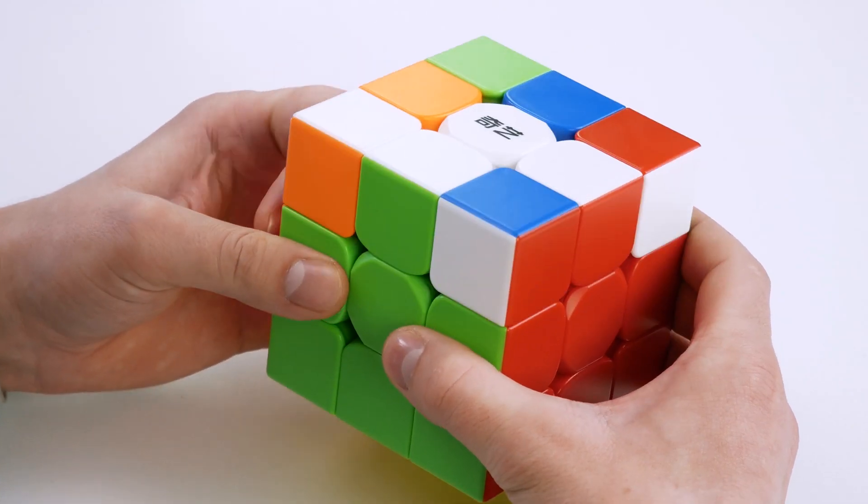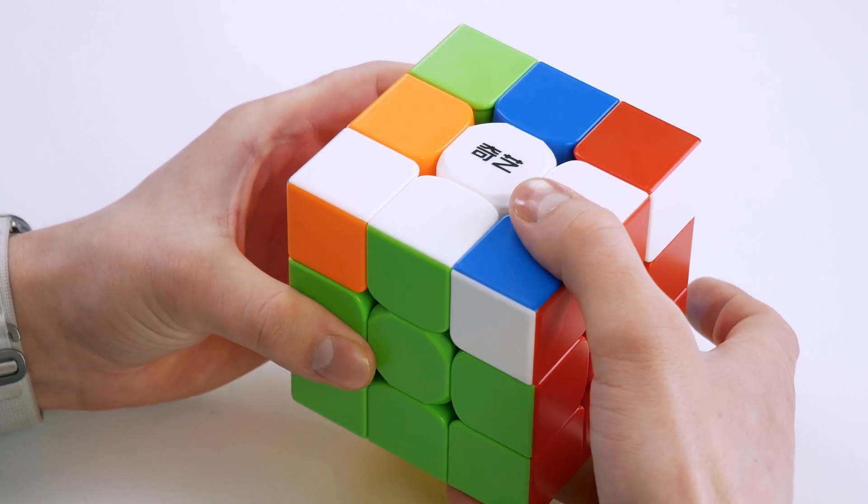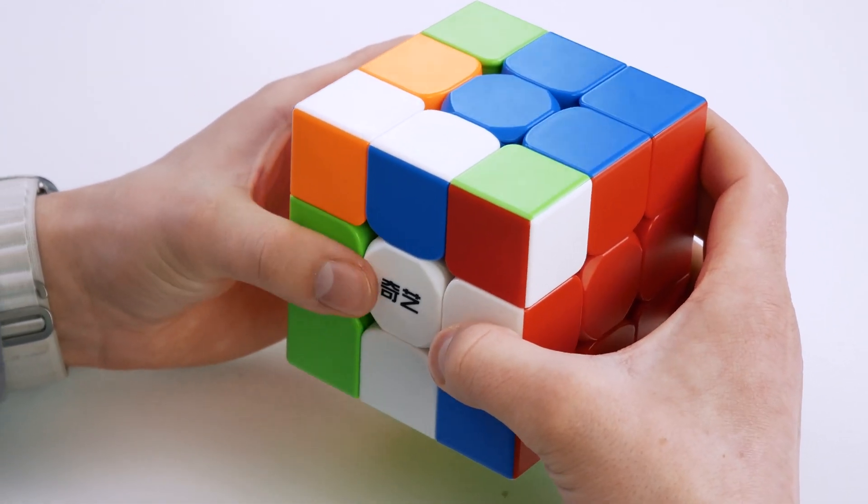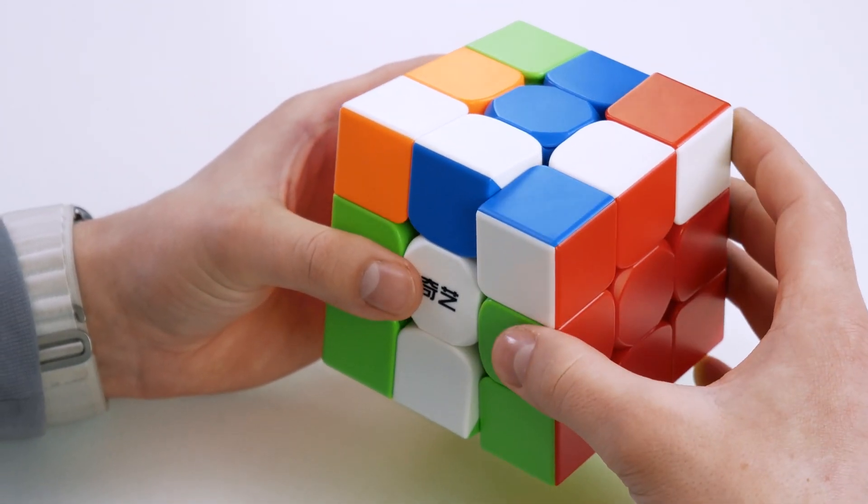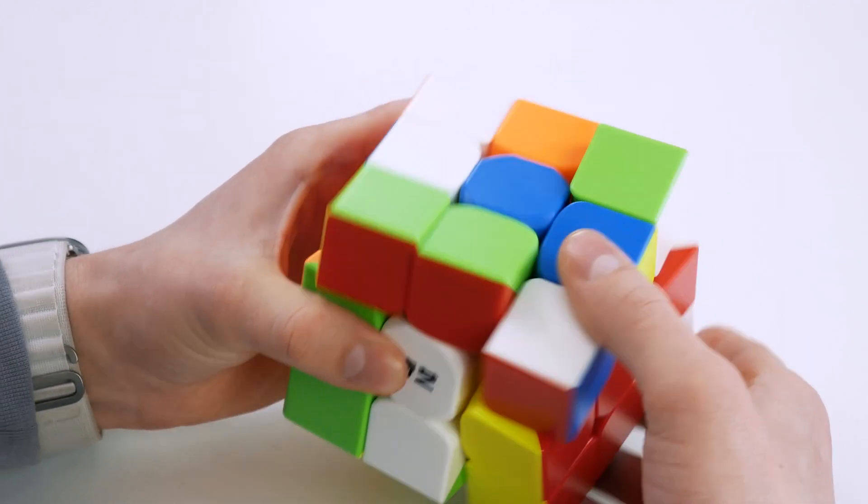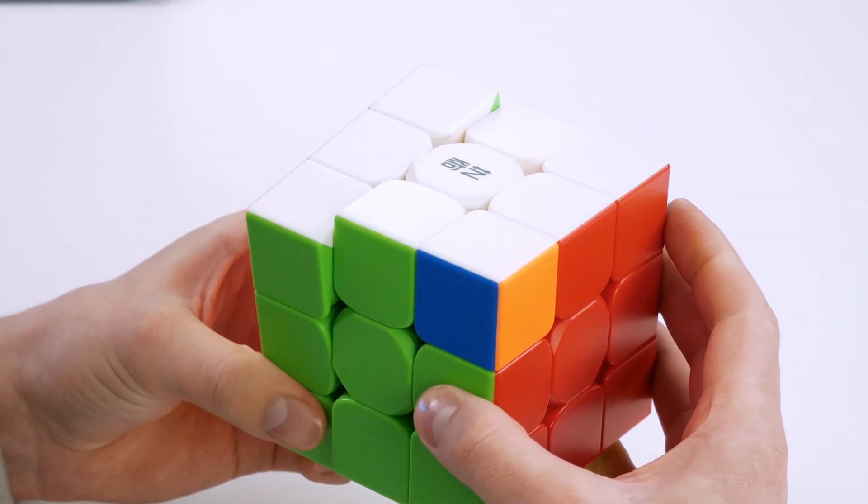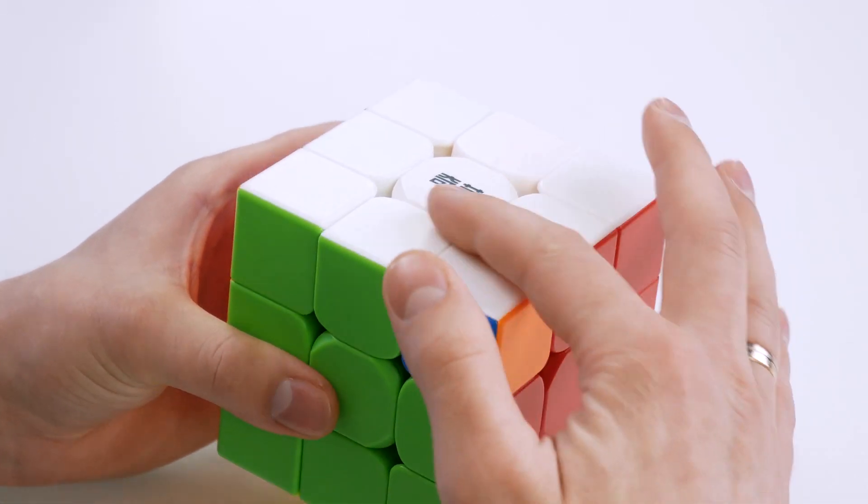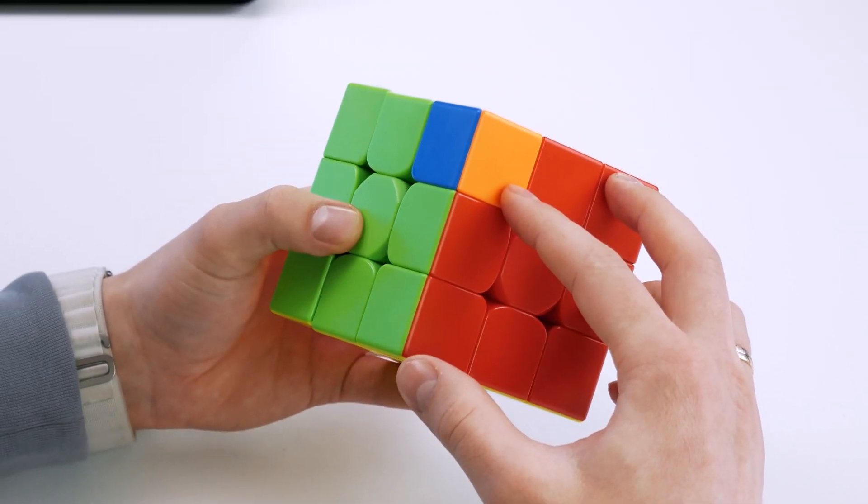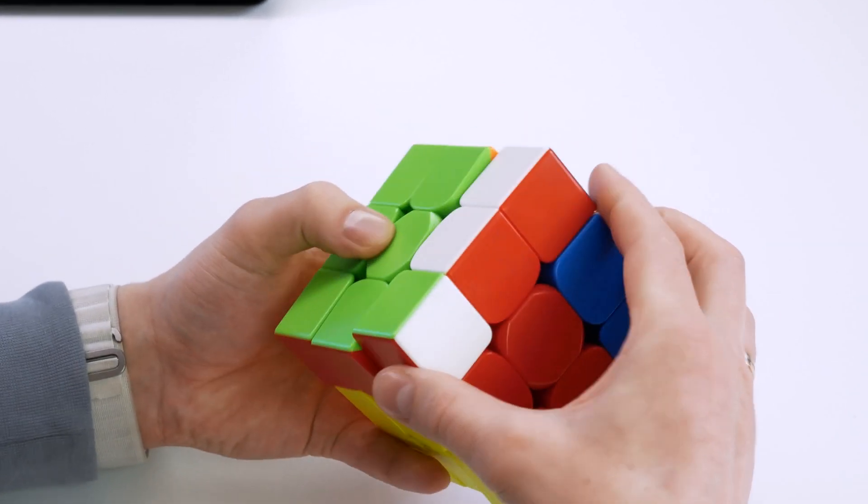He has already solved three pairs, one is left in the back. You need to turn the cube and solve it in the simplest way. I think each of us solved it this way. But then he acted very unusual - I have never seen this kind of algorithm, at least such finger tricks. He made U, then a really unusual move.